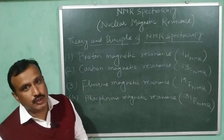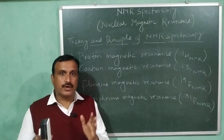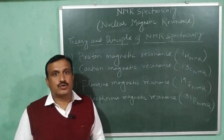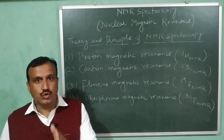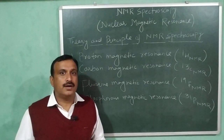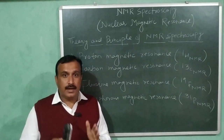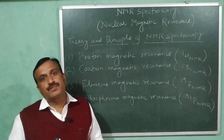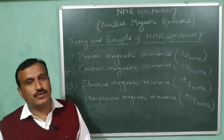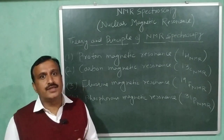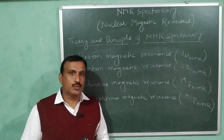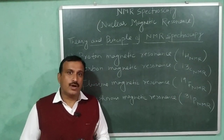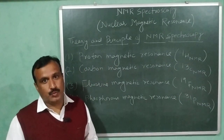In the introductory video of organic spectroscopy, I told you that the various types of spectroscopies like UV, IR, NMR, and mass spectrometry have emerged as a powerful tool for the identification and structural determination of organic compounds. I have discussed UV visible spectroscopy in my previous videos, and from this video I am starting NMR spectroscopy.